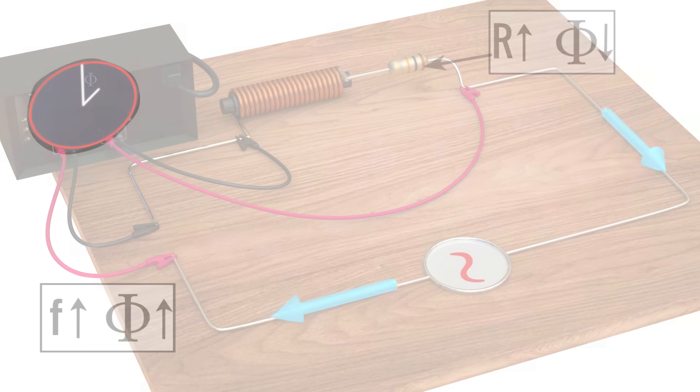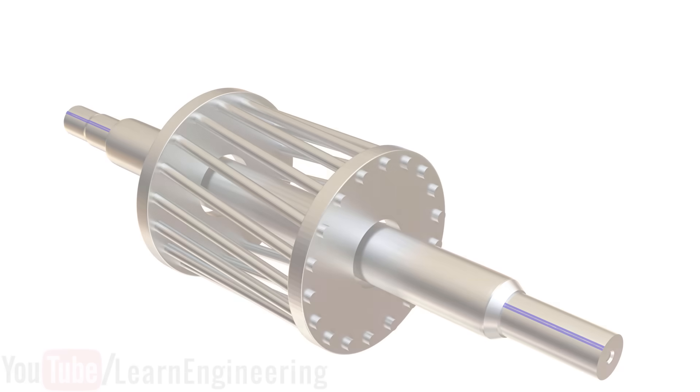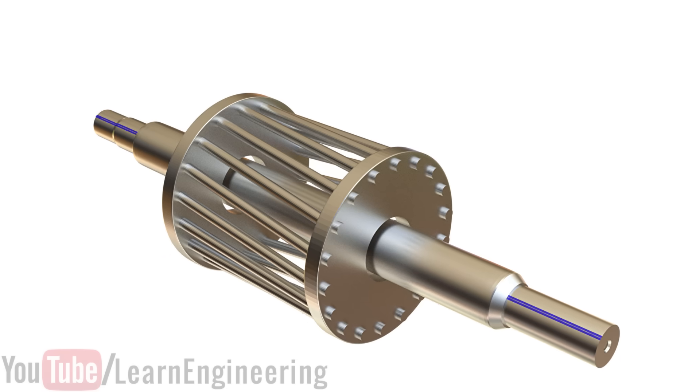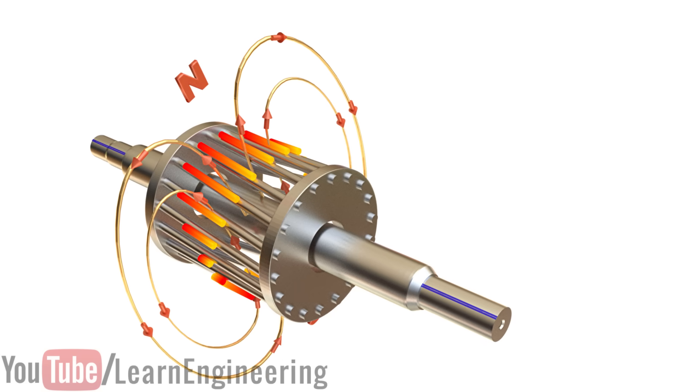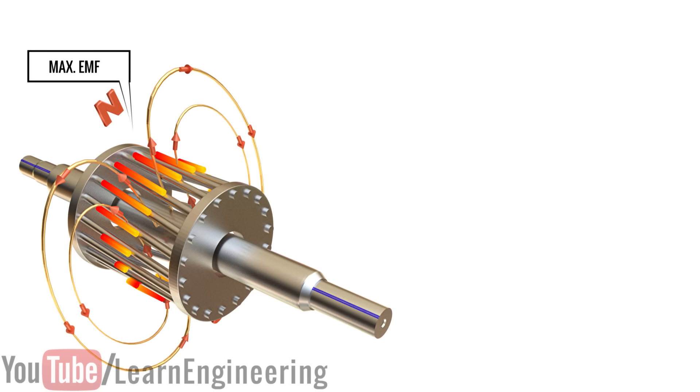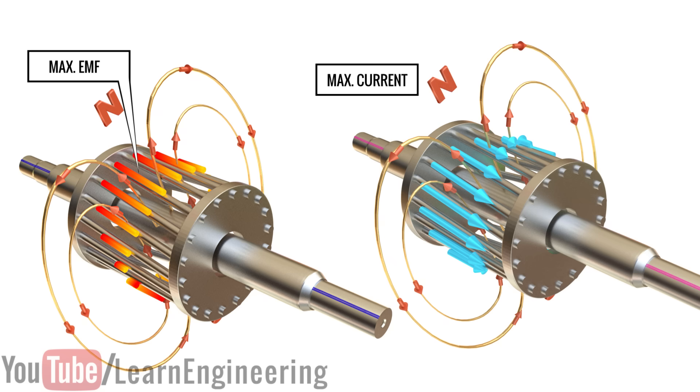The exact same thing is also happening in the rotor. The rotor is a combination of resistance and inductive reactance. Due to the same phase lag phenomenon, if the maximum EMF is on one bar, the maximum current will be on another bar.